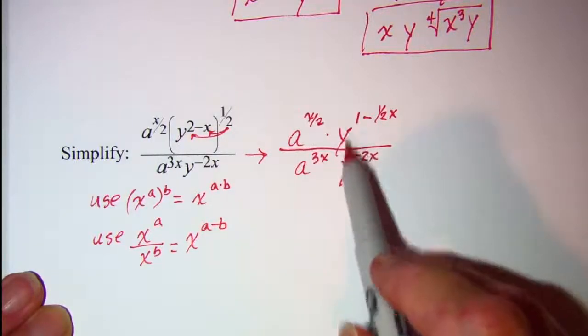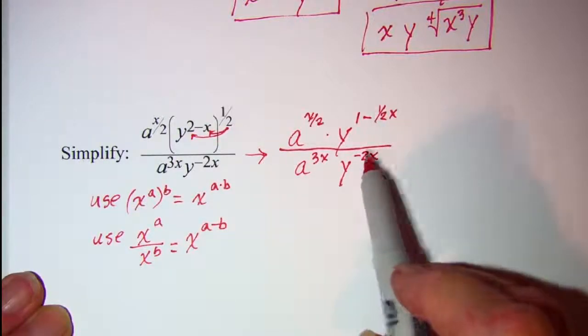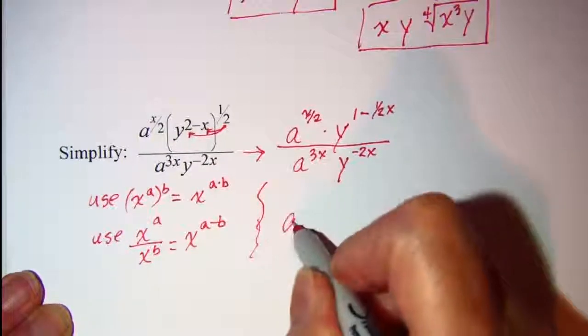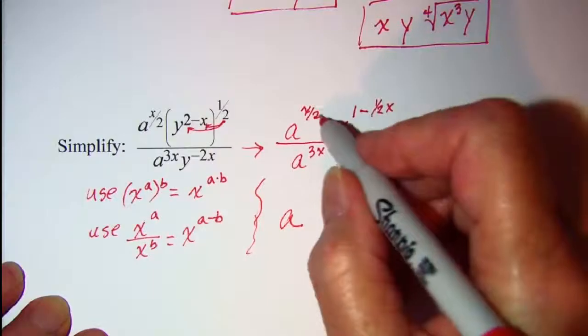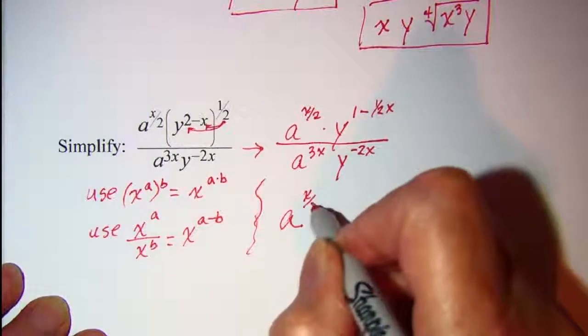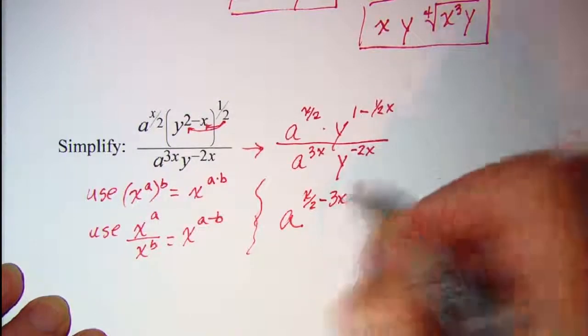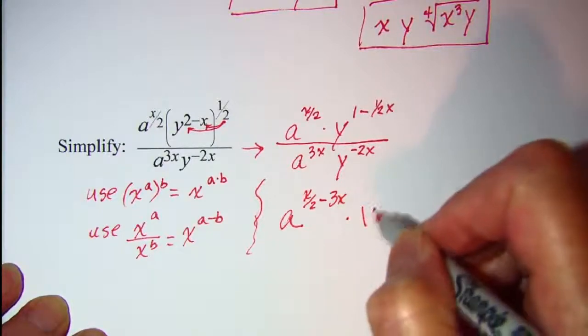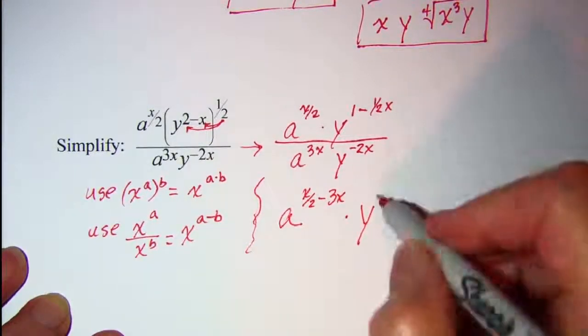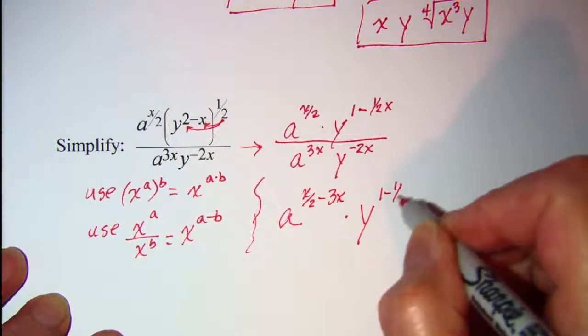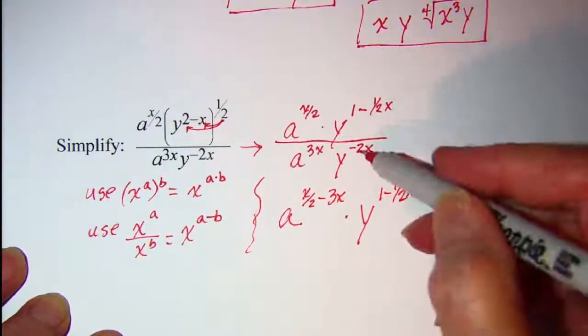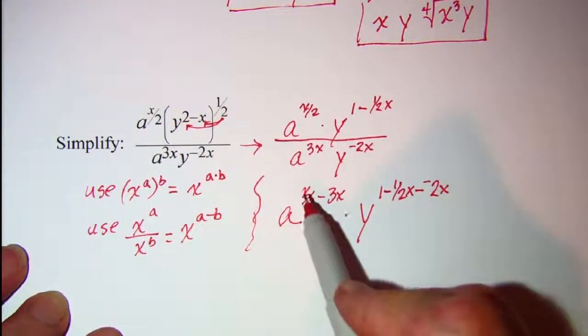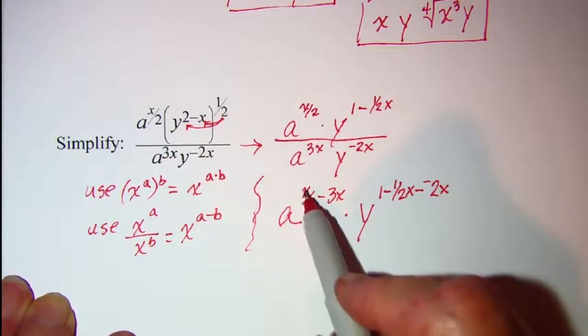And then also my base y I'll subtract these exponents. So I have a to the x over 2 minus 3x. That takes care of these two. And then I have y to the 1 minus 1 half x, subtract a negative 2x.